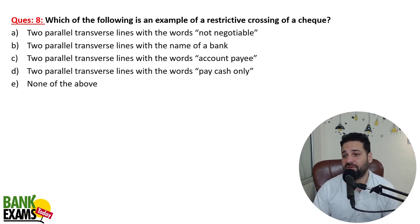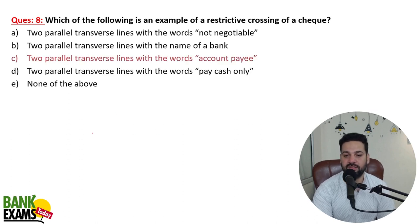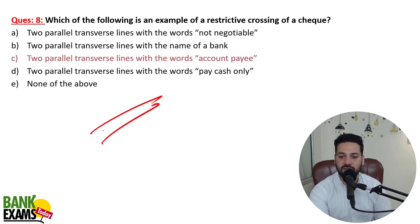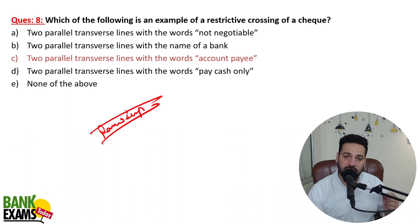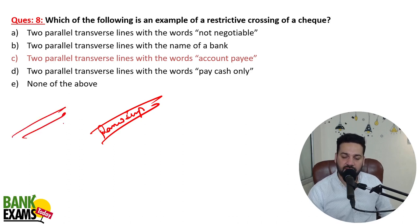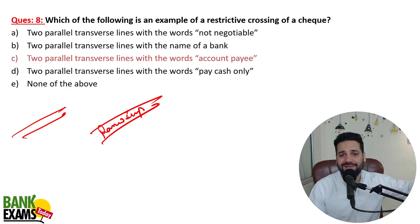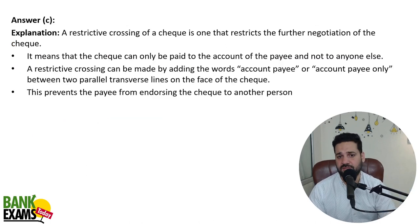Which of the following is an example of restrictive crossing? What is an account payee cheque? When you write on the cheque — for example, 'Ramandeep Singh' — that means payment should be made to the account of Ramandeep Singh only. If simply two lines are drawn, it means payment should be made only to whoever's name is written on the cheque. Further endorsements cannot be made on a restrictively crossed cheque.